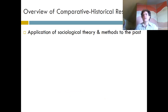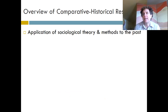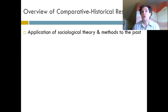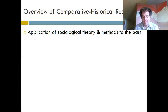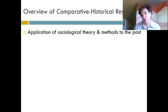So what is comparative historical research really all about? Essentially, it is the application of sociology to history — where you're taking sociological theory and sociological methods and applying them to the past, using sociology to understand history and the things that have happened in the past.